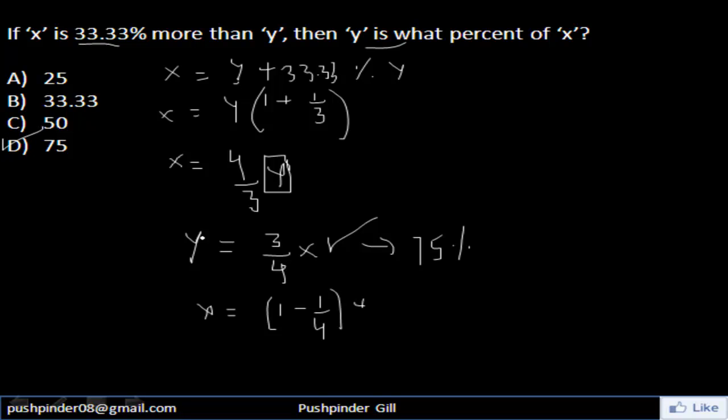However, if someone asks you, y is what percent less than x, then you use this expression and then you say y is 1 by 4 less than x and then you say y is 25% less than x. So they both are one and the same thing that y is 75% of x or y is 25% less than x, right?